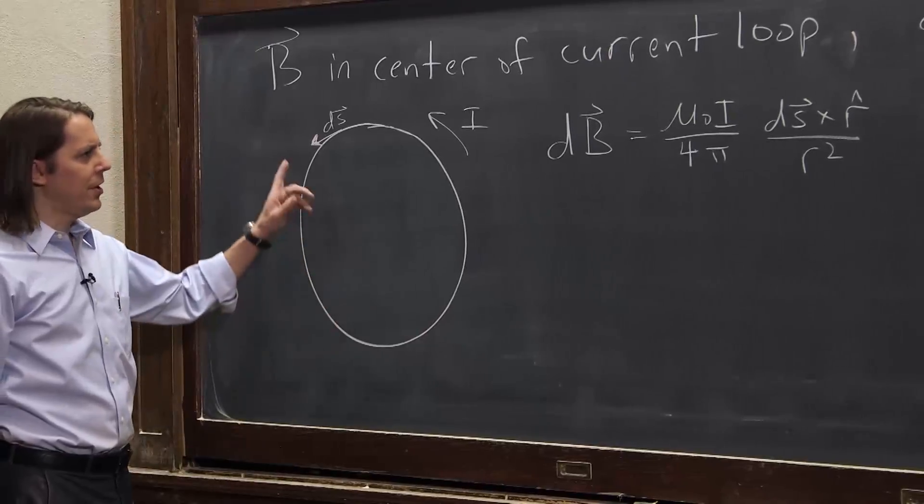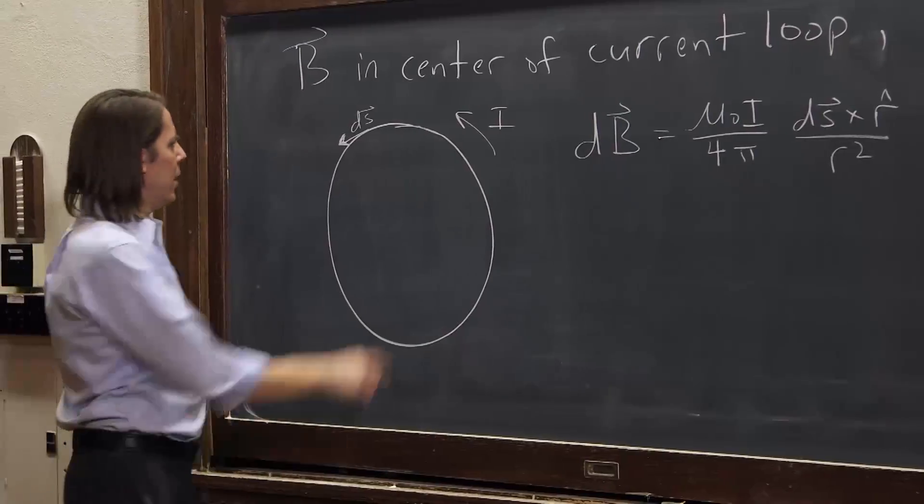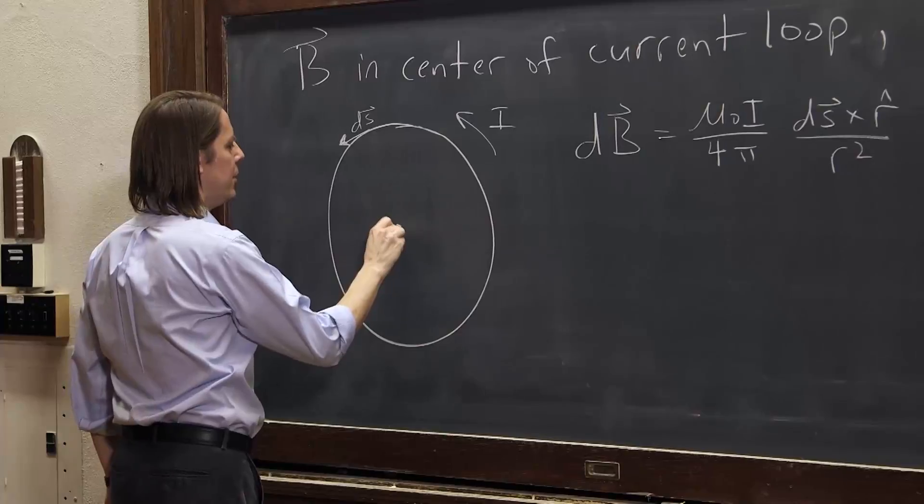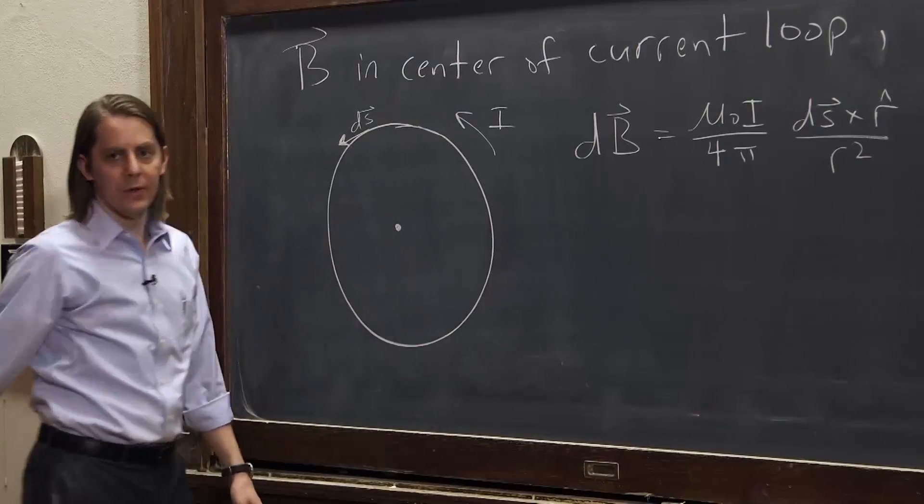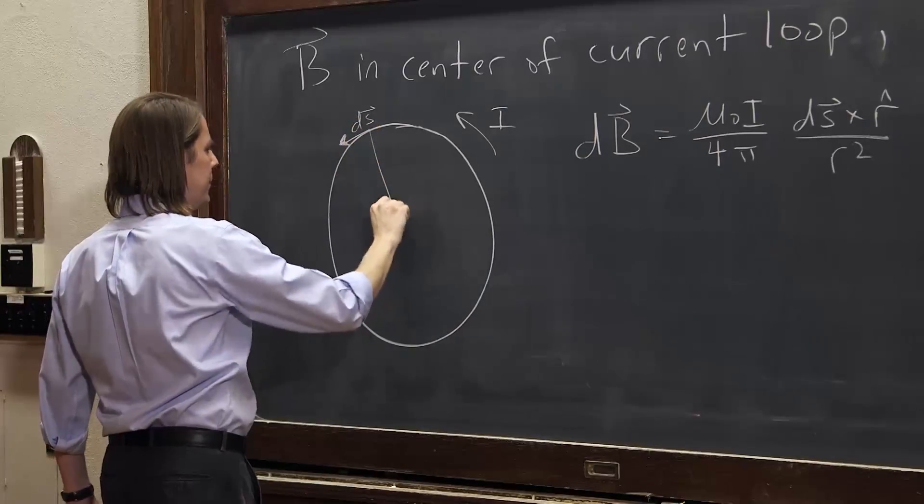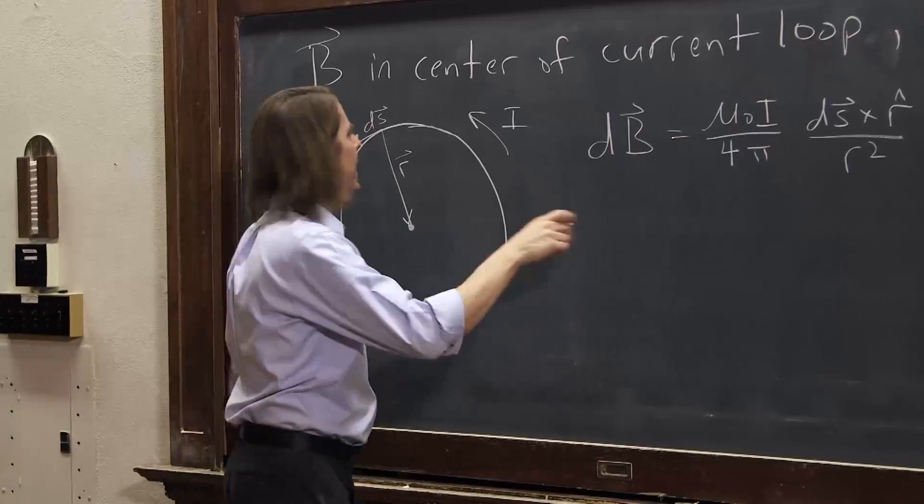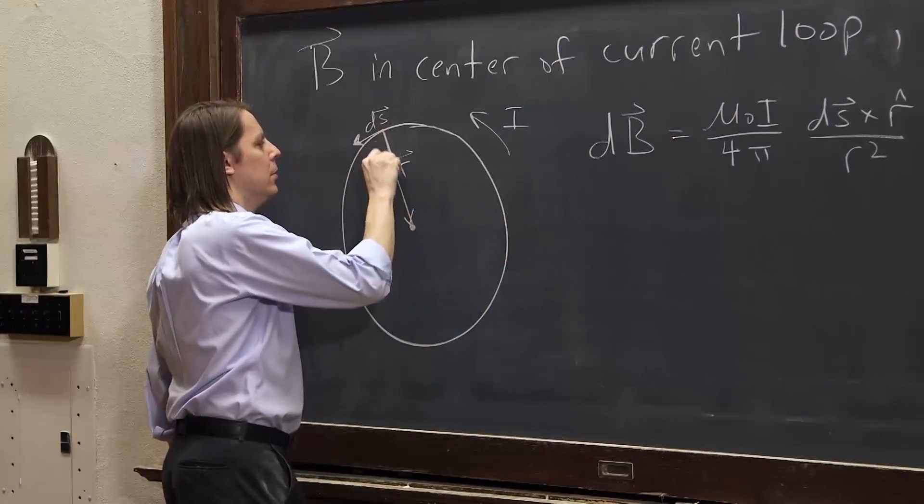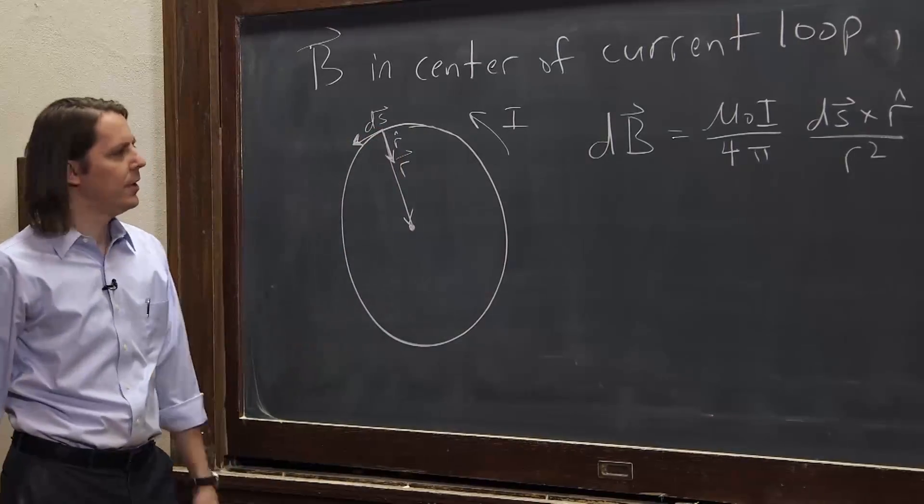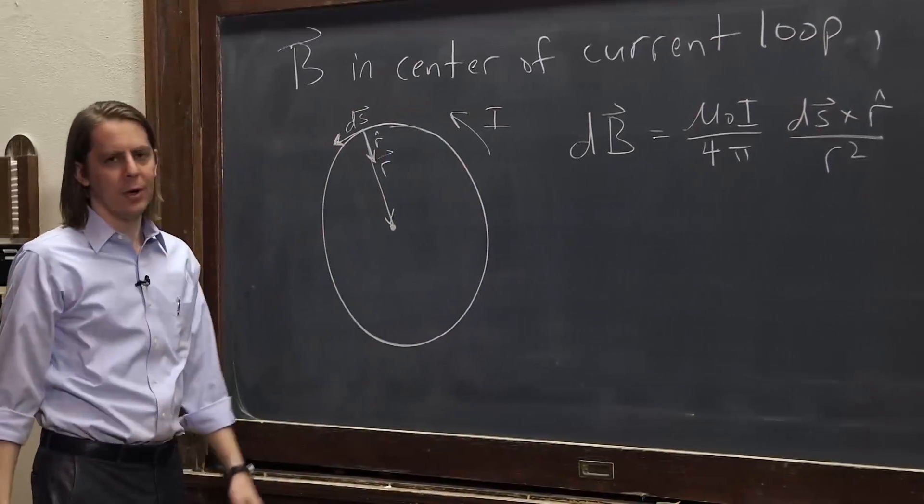So if we want to draw these vectors in here, I is already there, dS we've already drawn. r is from the dS to the place where we're measuring, where we're calculating the magnetic field. So we're doing it in the center of the circle, so r would look like this. So for that dS, there's the r. Therefore, r hat is the little unit vector in that direction, and it changes as you go around the circle. And r with nothing on it is just the magnitude. That's just the value of the radius.